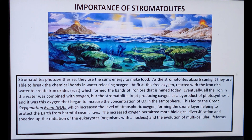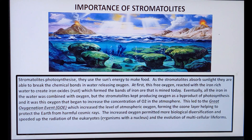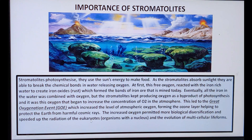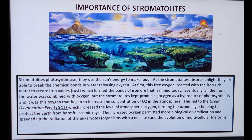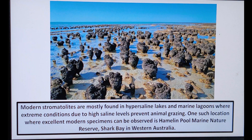But stromatolites kept producing oxygen as a byproduct of photosynthesis, and it was this oxygen that began to increase the concentration of O2 in the atmosphere. This led to the Great Oxygenation Event, which increased the level of atmospheric oxygen, producing the ozone layer, helping to protect the Earth from harmful cosmic rays. The increased oxygen permitted more biological diversification and speeded up the radiation of eukaryotes and the evolution of multicellular life forms. In short, stromatolites were the early organisms which helped to increase the concentration of oxygen in the atmosphere, playing a major role in the evolution of multicellular life.